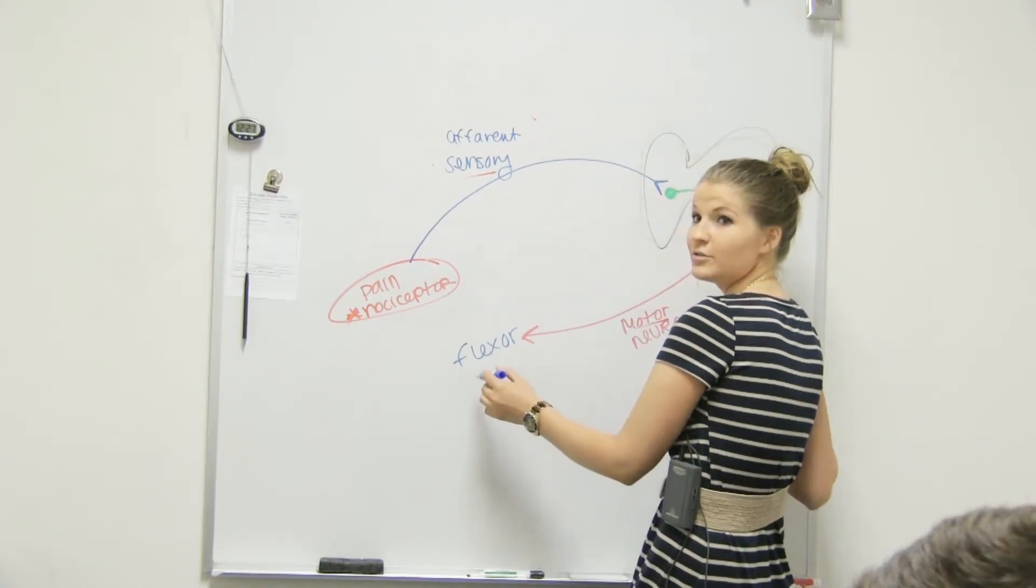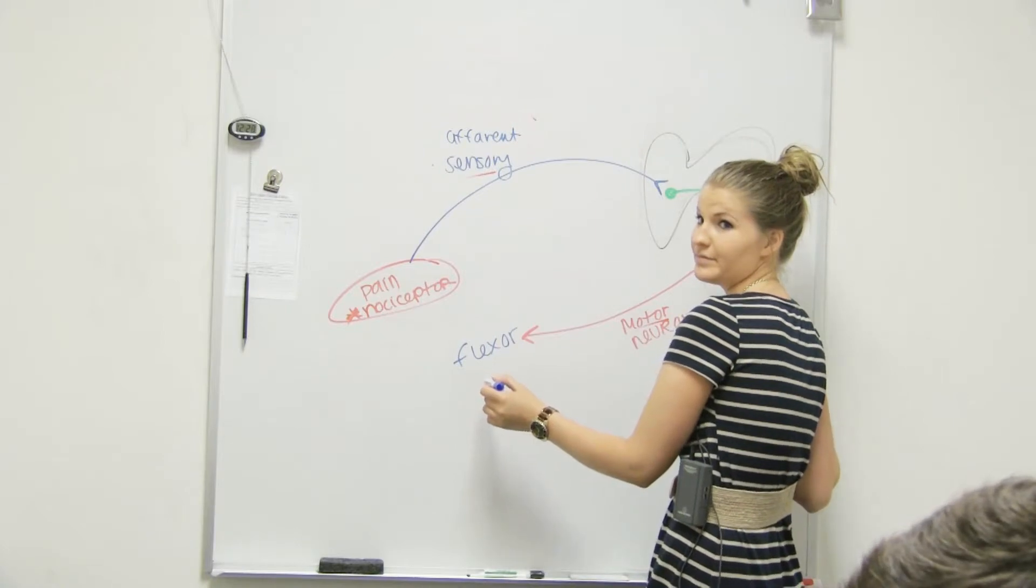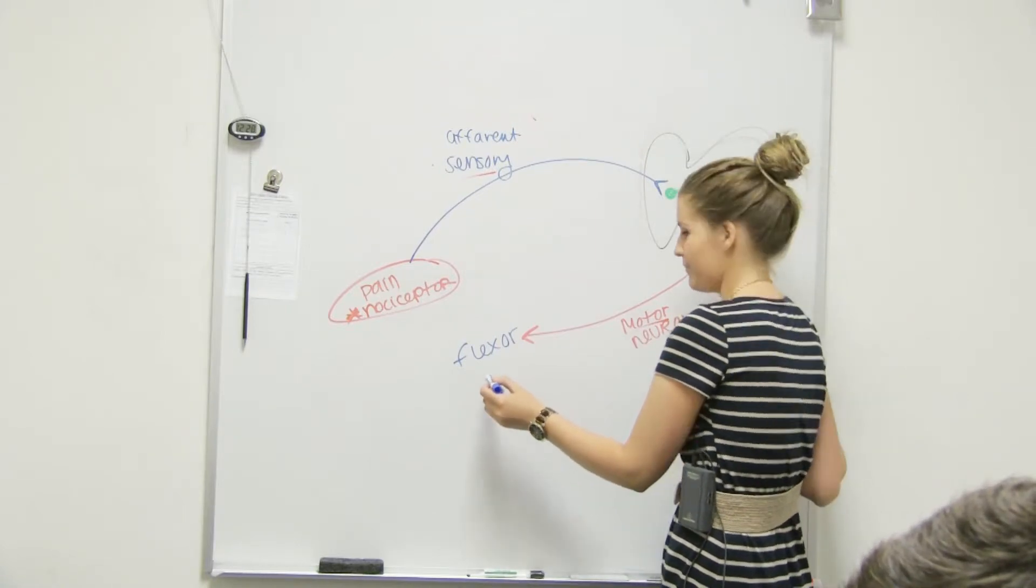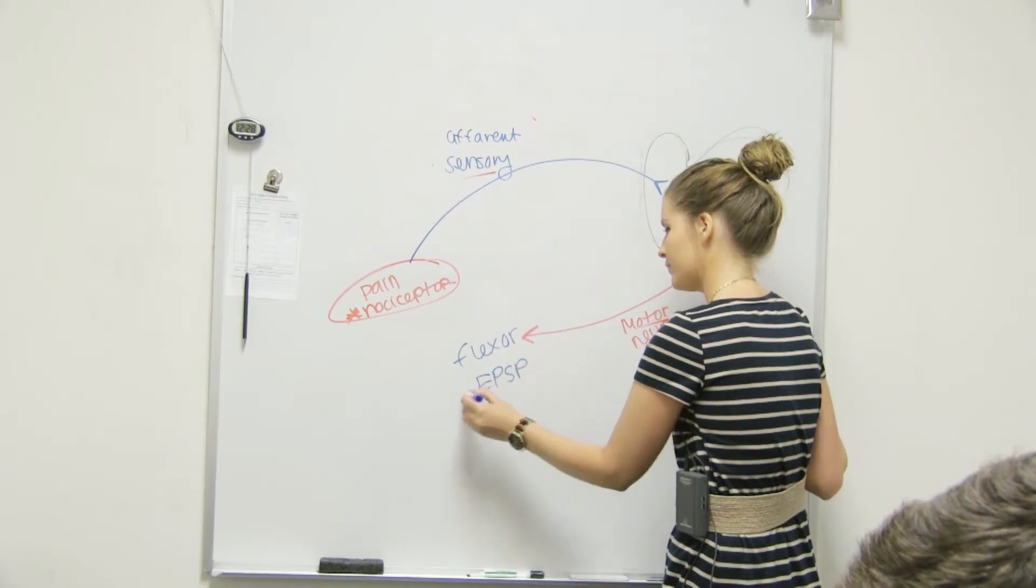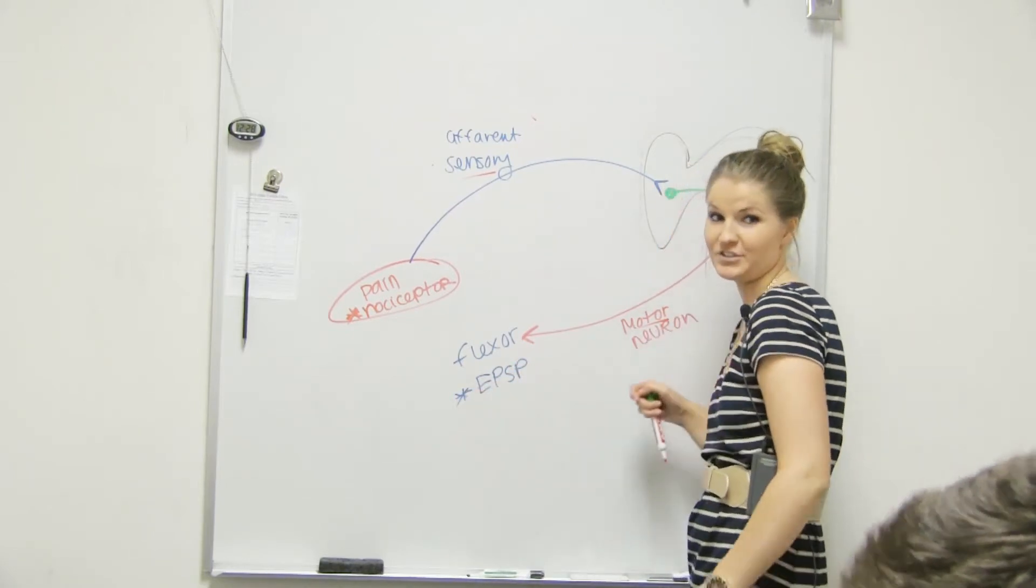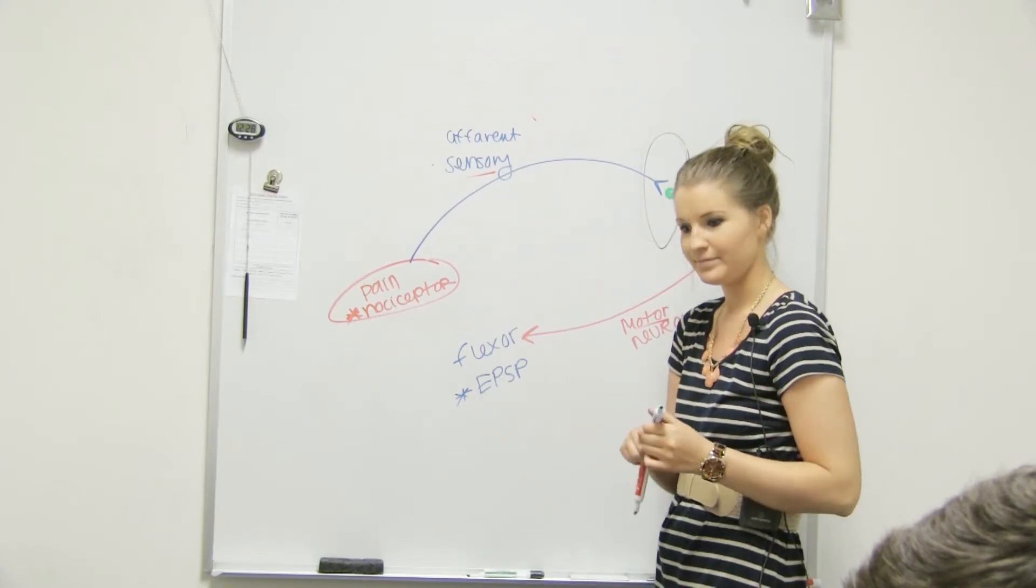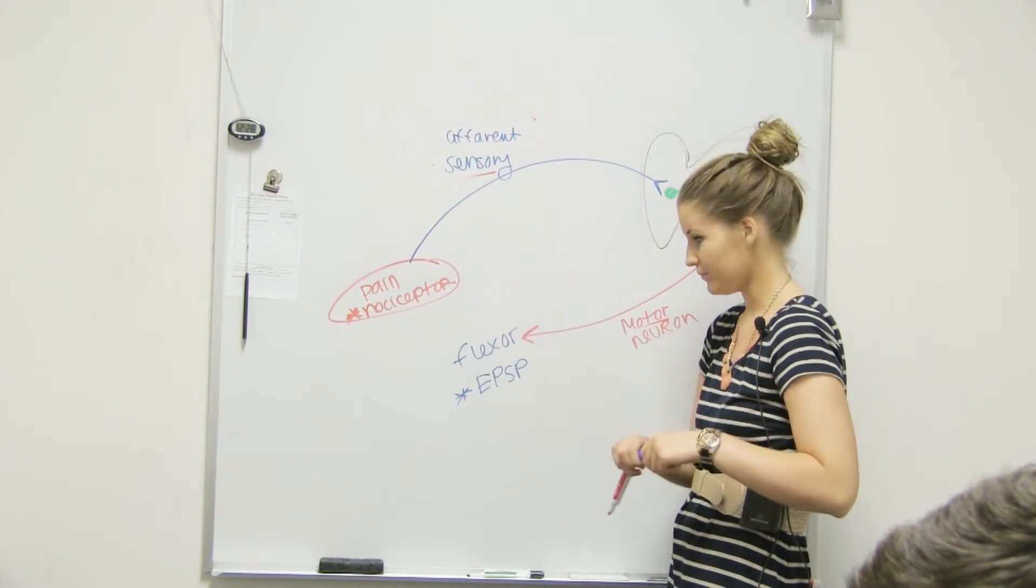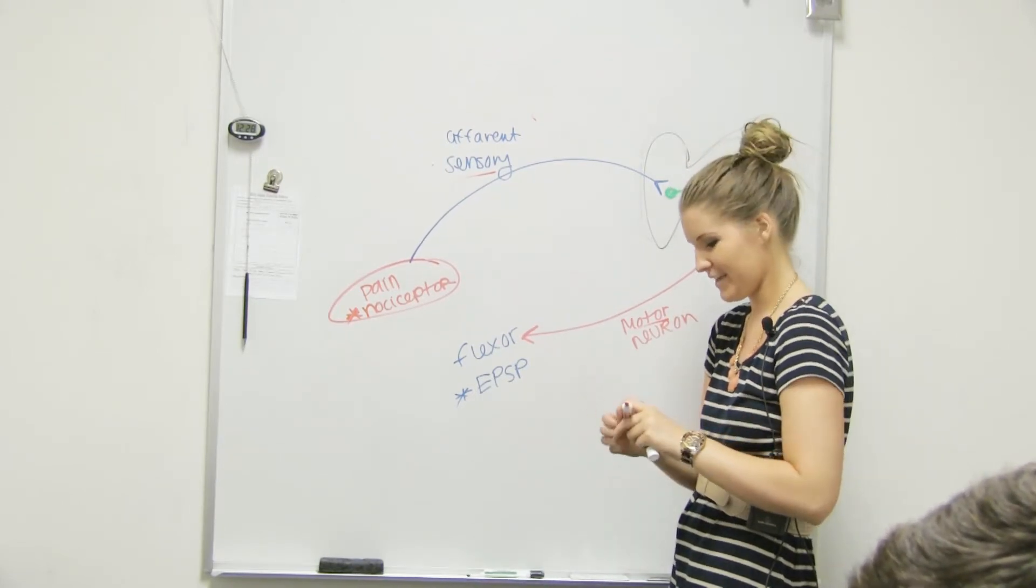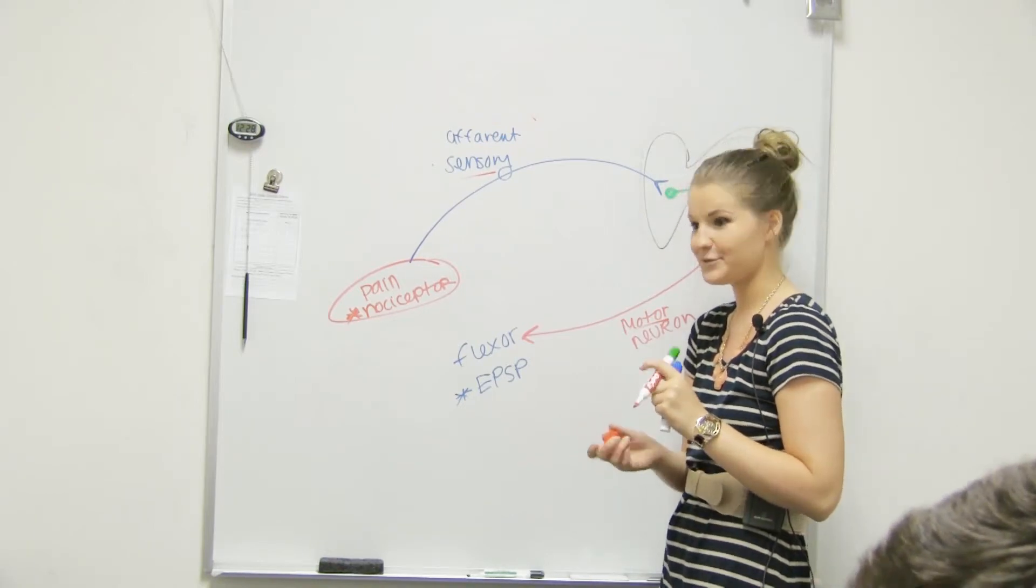Flexor is—which one, excitatory or inhibitory? Excitatory. So we're going to contract, we're not going to relax it. If we relax it, we would really just stay there. We'd get to feel more pain, and we don't like pain. Our nature is to avoid pain.